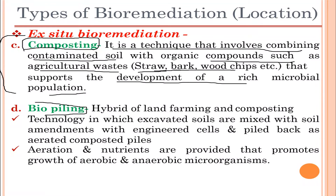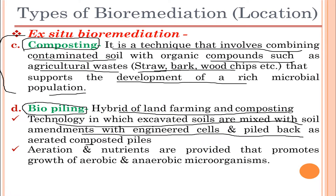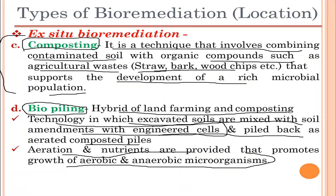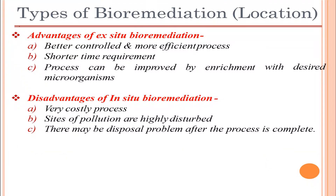The next process is biopiling, which is a hybrid of land farming and composting. It is a technology in which excavated soils are mixed with soil amendments containing engineered cells and piled back as aerated composted piles. Aeration and nutrients are provided to promote growth of aerobic microorganisms. The contaminated soil is mixed with fertile soil containing engineered microbes helpful in degradation, placed in a composting medium, and supplied with essential nutrients.